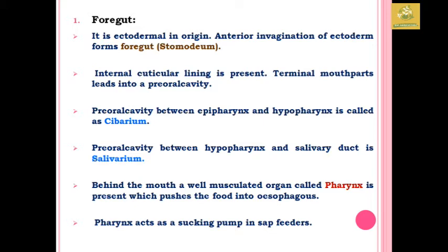Starting with the foregut, which is ectodermal in origin: the anterior invagination of ectoderm forms the foregut, also known as stomodeum, and an intracuticular lining is present. It forms a terminal mouth which leads to the pre-oral cavity. The pre-oral cavities in the foregut are two in number: the cibarium, which is present between the epipharynx and hypopharynx, and the salivarium, which is present between the hypopharynx and salivarium.